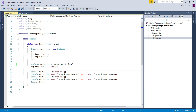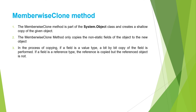Now I hope you understand the role of the memberwise clone method. Key points to remember: the memberwise clone method is part of the System.Object class and creates a shallow copy of the given object. It only copies the non-static fields of the object to the new object. In the process of copying, if a field is a value type, a bit-by-bit copy of the field is performed. If a field is a reference type, the reference is copied but the referenced object is not.